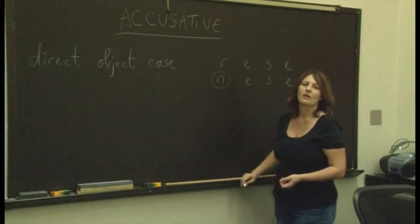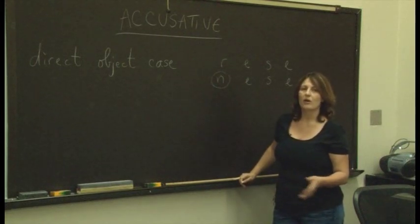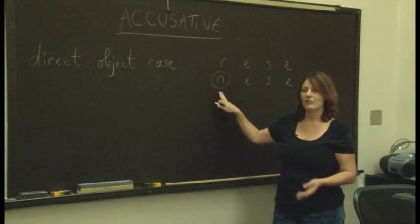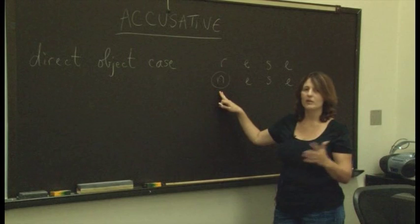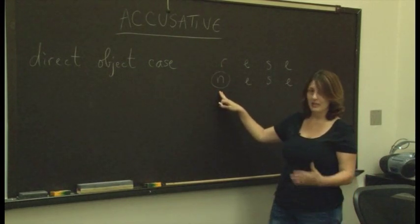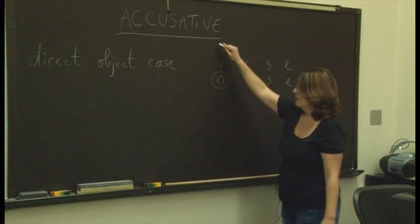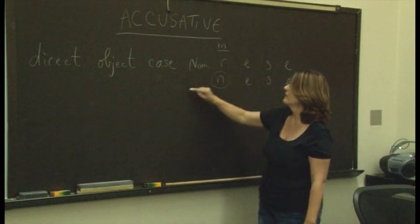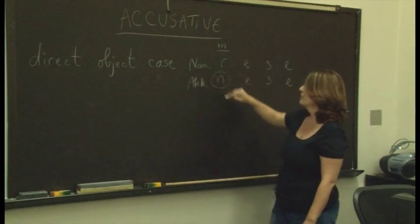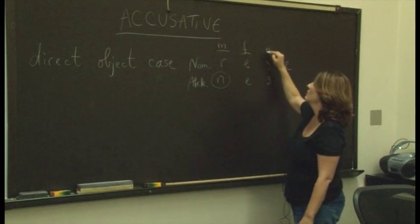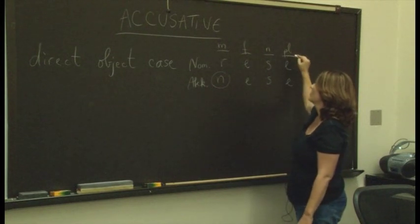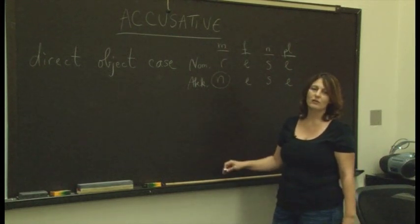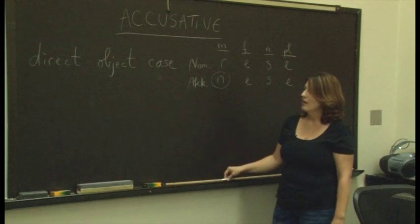And actually, this change also happens for all other ein and der words for the masculine. Ein becomes einen, mein becomes meinen, et cetera, diese becomes diesen, but only if it's masculine. This is nominative, this is accusative, and only the masculine changes. The feminine stays the same, neuter, plural, they all stay the same. So it's not so hard, because you have to focus only on one gender that changes, the rest stay the same. And it's the direct object.